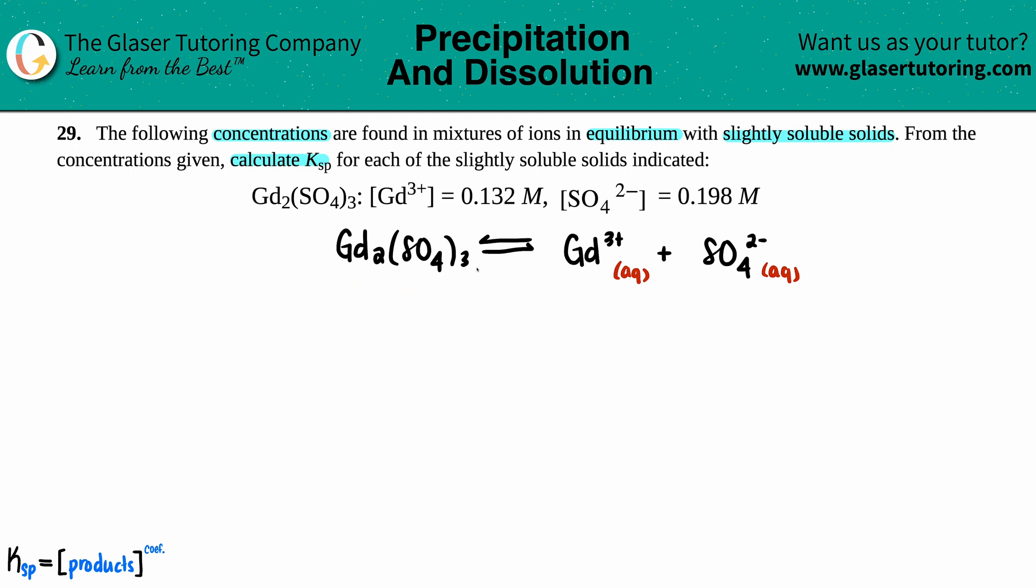Keep in mind that this is the solid, right, the slightly soluble solid, but it's a solid nonetheless. Now we just have to balance. There's two Gds, so I need a 2 in front of the ion, and there's three sulfates, so I have to put a 3 in front of the sulfate.